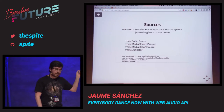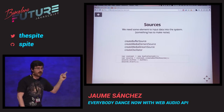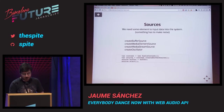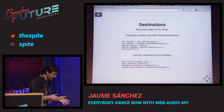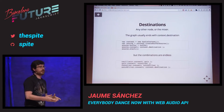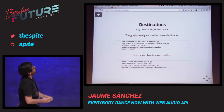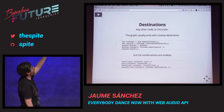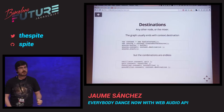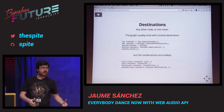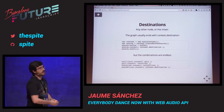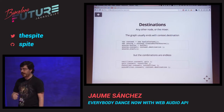That code will play, but you're not going to hear anything because there's one important step missing, which is connecting the destination. The destination is what you plug your node into. So: create the context, create the buffer source, assign the buffer, connect it to the context destination — which is the end of our Web Audio chain, usually the headphones — and start the sound. Then you would hear it on your headphones.